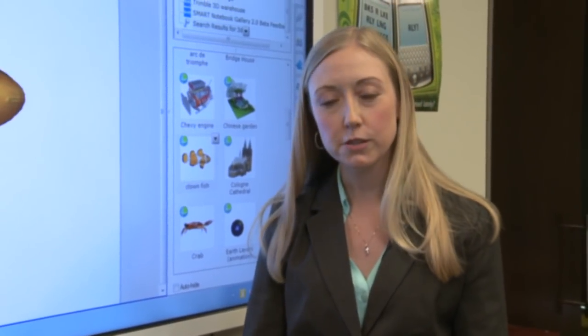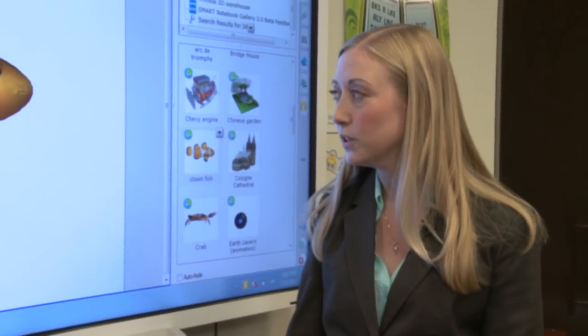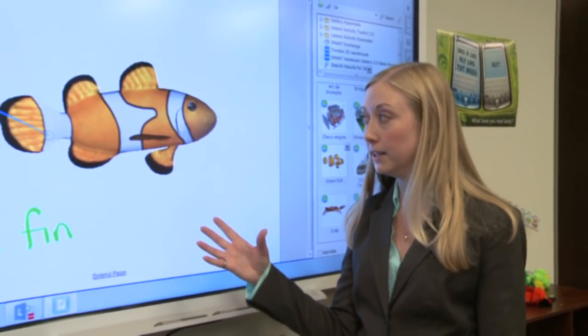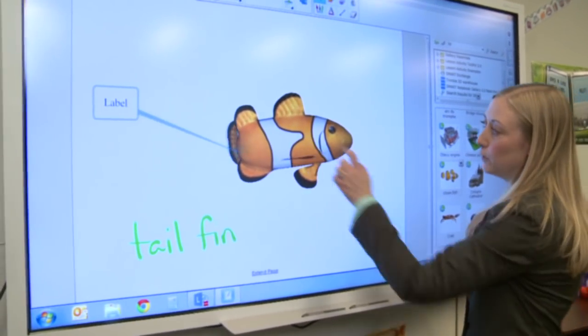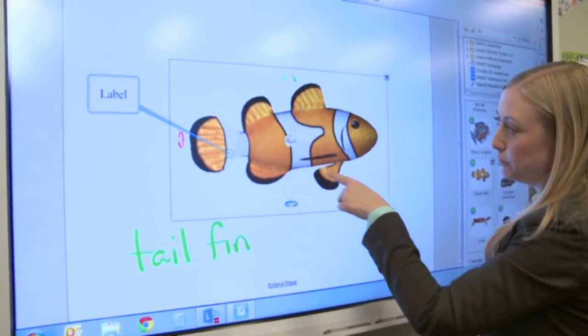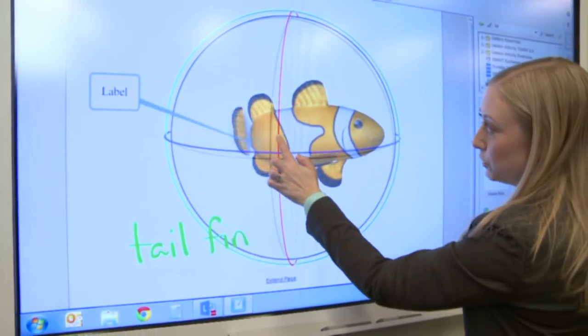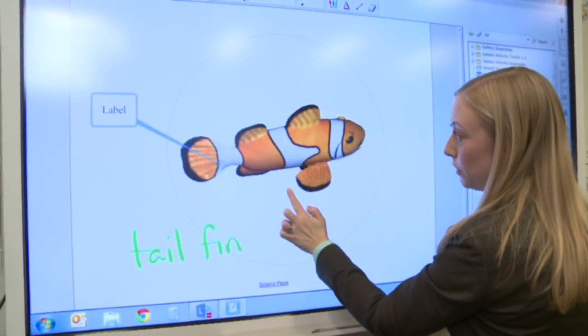Smart Notebook 3D Tools allows you to insert 3D objects right on the notebook page. So you can see here that I have an animated clownfish, and when I click on it, several labels appear, and I can actually use these labels or handles to rotate the fish all around in 3D.